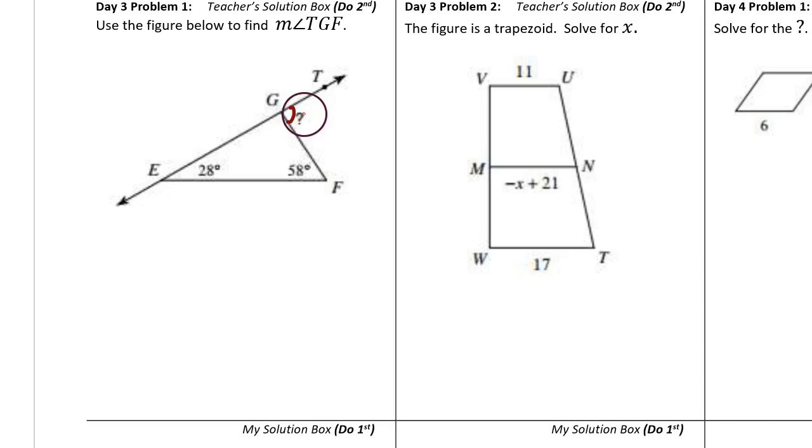This angle is an exterior angle to the triangle. There's a theorem about triangles. It's called the exterior angle theorem and it says that an exterior angle is the sum of the remote interior angles.